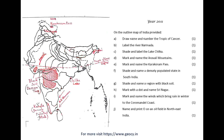Year 2011. On the outline map of India provided: A. Draw, name and number the Tropic of Cancer. B. Label the River Narmada. C. Shade and label Lake Chilka. D. Mark and name the Aravalli Mountains. E. Mark and name the Karakoram Pass. F. Shade and name a densely populated state in South India. G. Shade and name a region with black soil. H. Mark with a dot and name Srinagar. I. Mark and name the winds which bring rain in winter to the Coromandel Coast. J. Name and print O on an oil field in Northeast India.